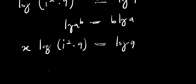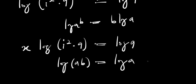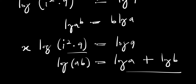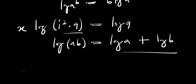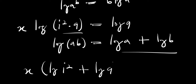From here we make use of another property of log: if you have log of a times b, this equals log of a plus log of b. We apply this identity, and we are now going to have x times the quantity log of i squared plus log of 9, and this equals log of 9.